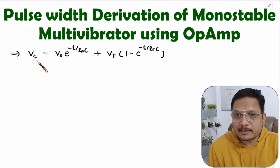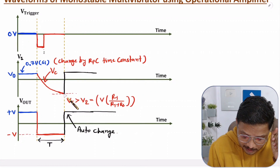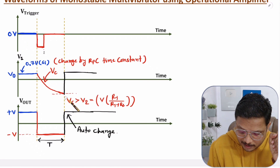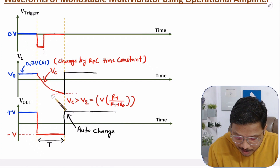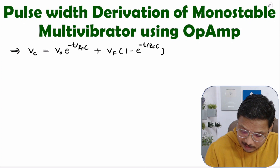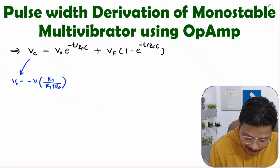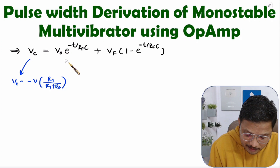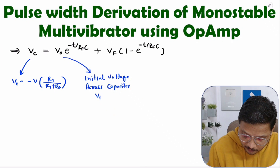VC is the voltage at which the transition happens. This VC voltage, when it reaches a certain point, causes a transition from -V. Specifically, when VC goes below V2, there is a transition, so VC = −V × R1 / (R1 + R2) is the voltage at which the transition will happen. Now, V0 is the initial voltage across the capacitor, which is the diode forward bias voltage Vd — that is 0.7 volts in the case of silicon diodes.